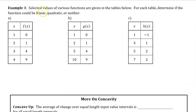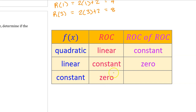Example 3. Selected values of various functions are given in the tables below. For each table, determine if the function could be linear, quadratic, or neither. Pause the screen and memorize this chart. If f of x is linear, the rate of change will be constant. If f of x is quadratic, then the rate of change of the rate of change will be constant — in other words, the rate of change will be changing at a constant rate.